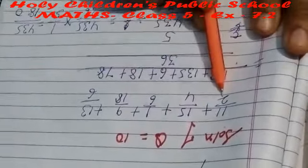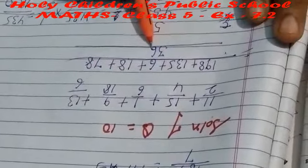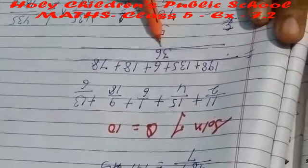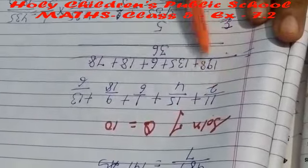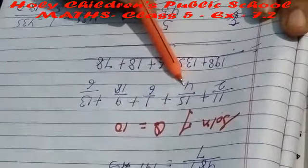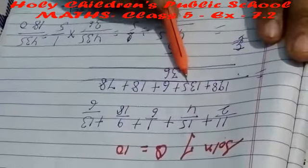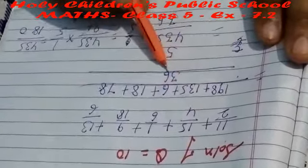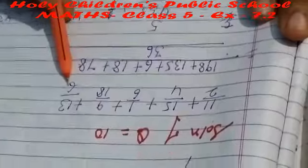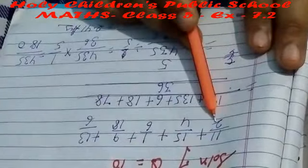We take the LCM of the denominators 2, 4, 6, 18, and 6. The LCM is 36. For 11/2: 36 ÷ 2 = 18, so 11 × 18 = 198. For 15/4: 36 ÷ 4 = 9, so 15 × 9 = 135. For 1/6: 36 ÷ 6 = 6, so 1 × 6 = 6. For 9/18: 36 ÷ 18 = 2, so 9 × 2 = 18. For 13/6: 36 ÷ 6 = 6, so 13 × 6 = 78.